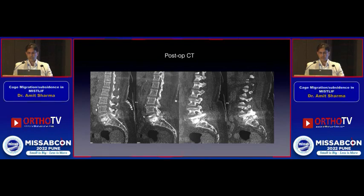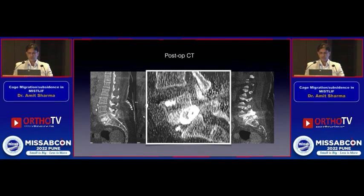The patient was sent for a CT scan, which confirmed that the cage was coming out into the left foraminal area, as clearly seen on the imaging.